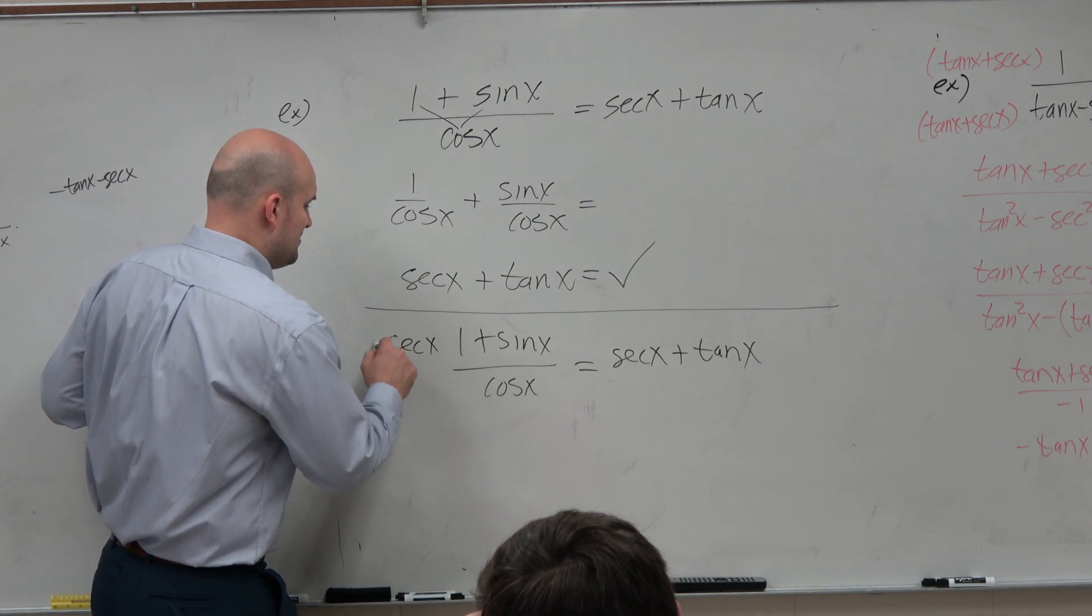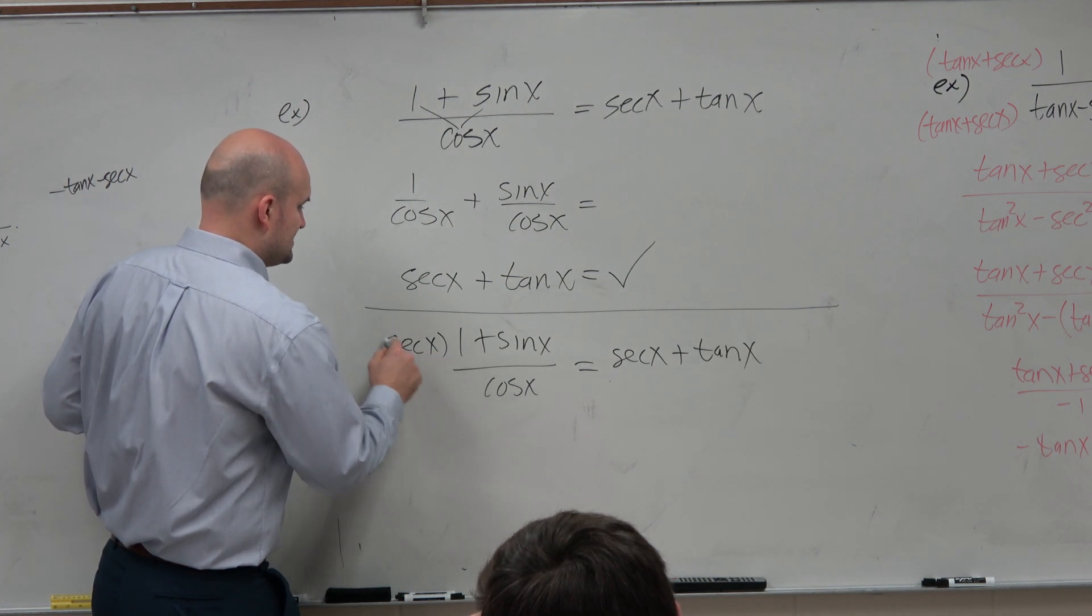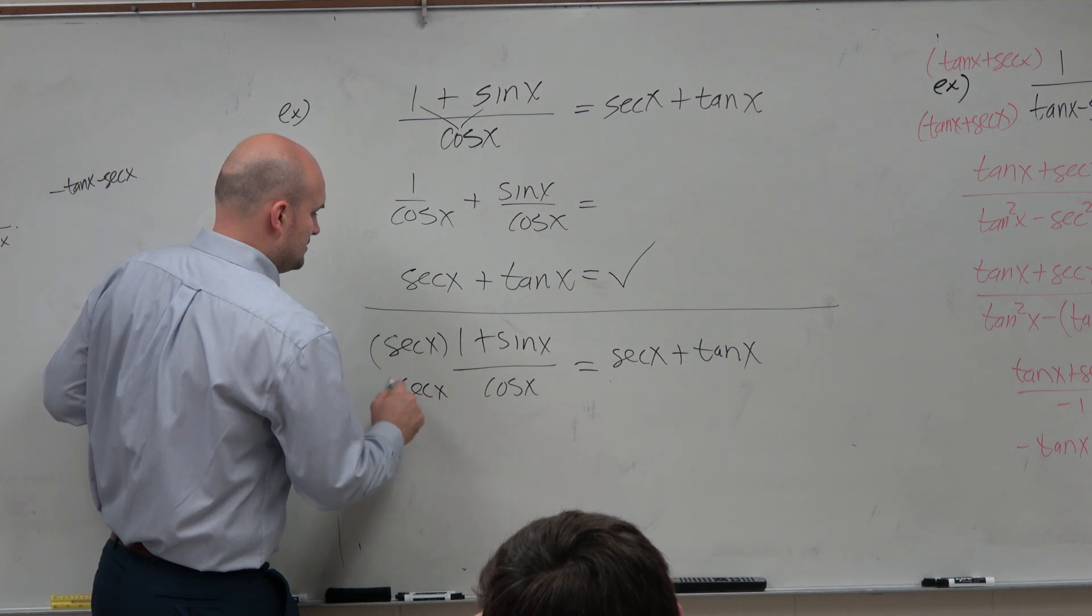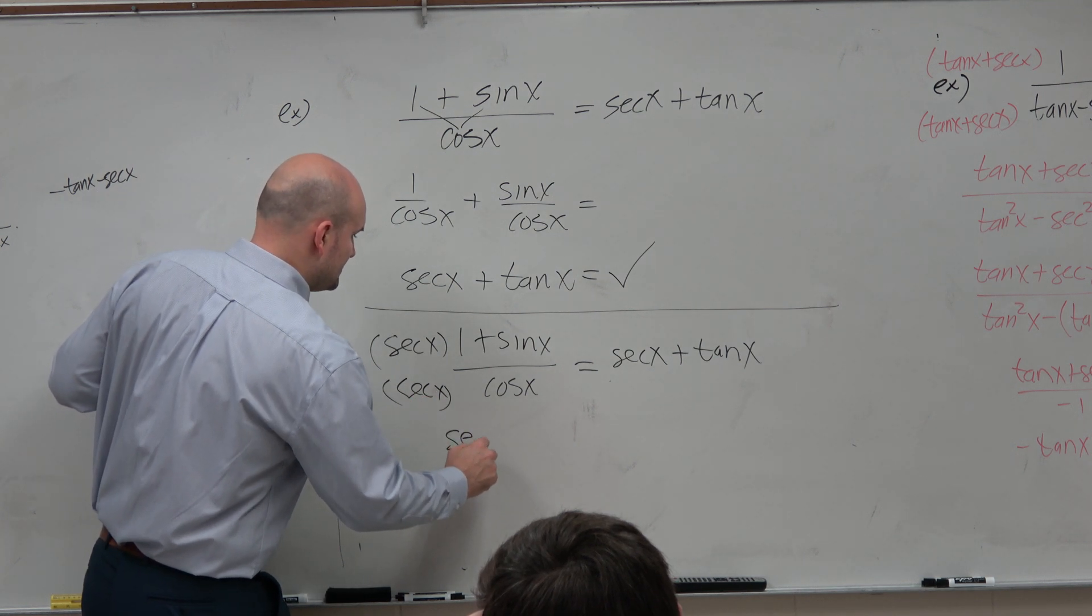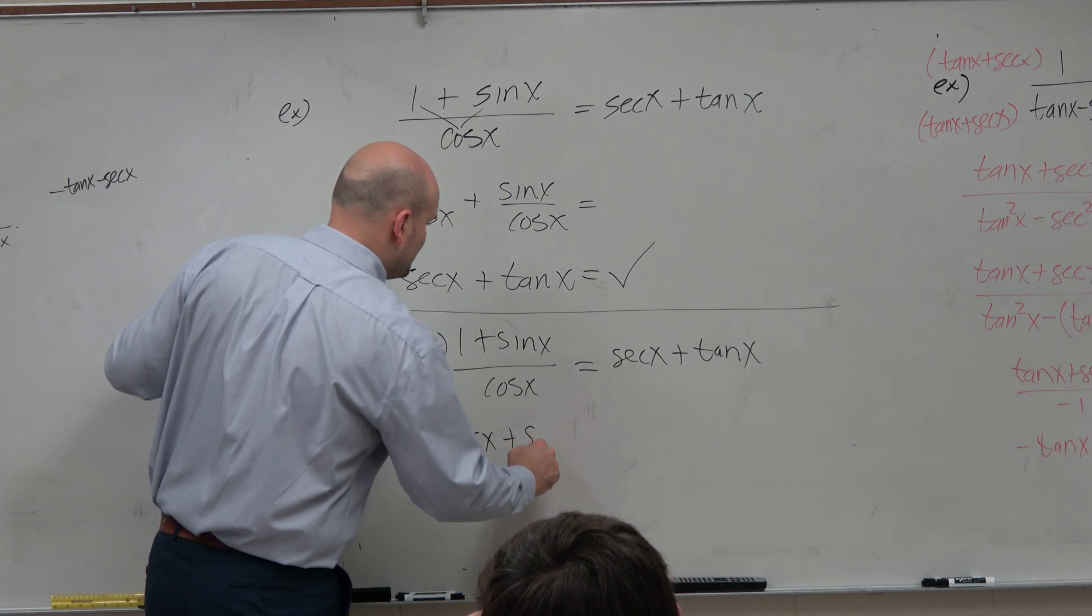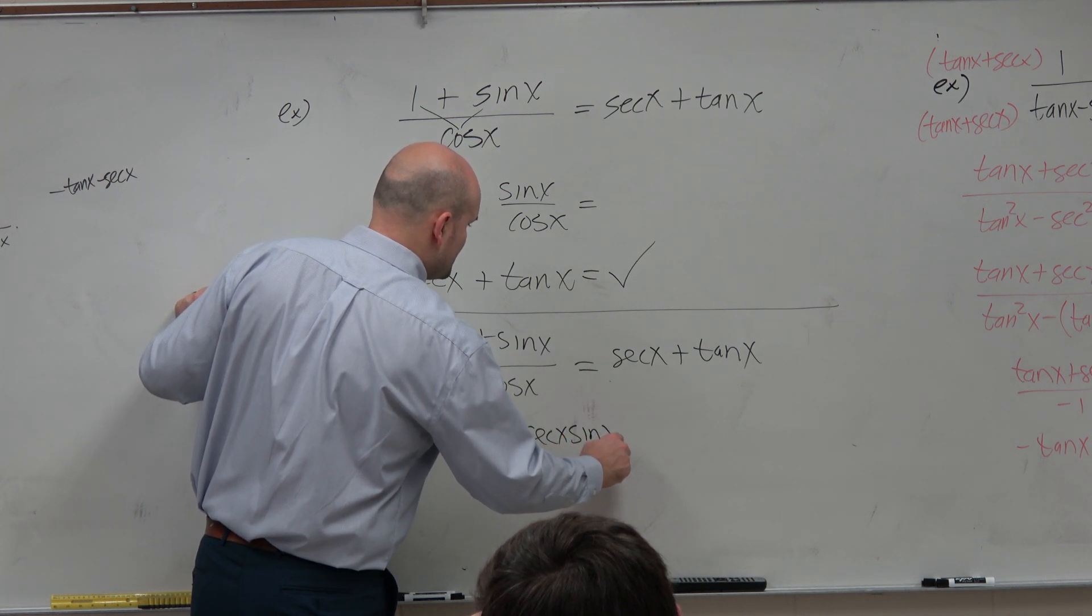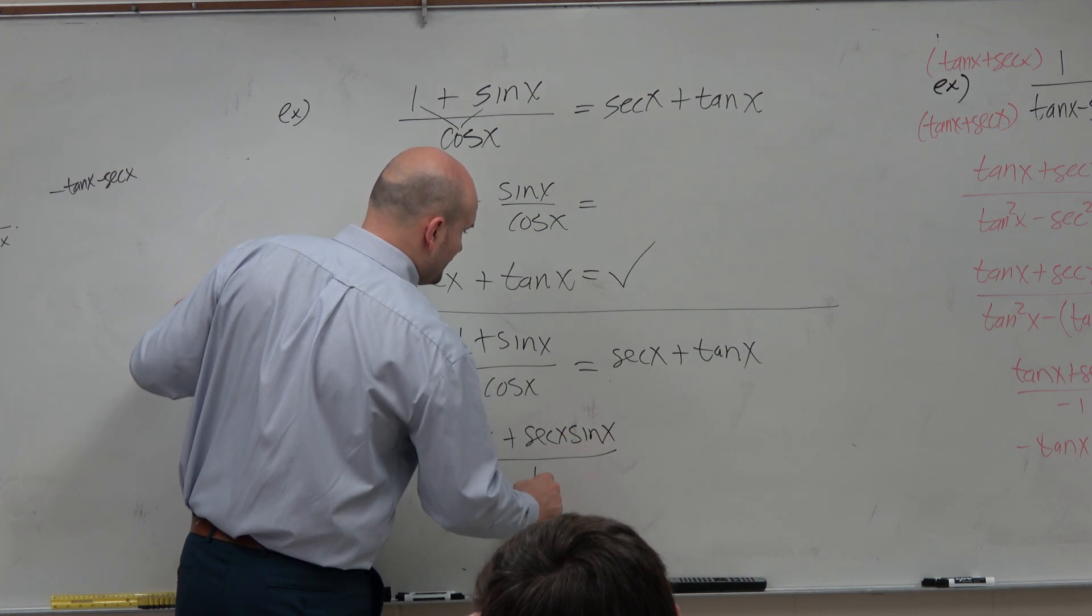So what if I multiplied the top and the bottom by secant? I would then get secant of x plus secant of x times sine of x, all over 1. Right?